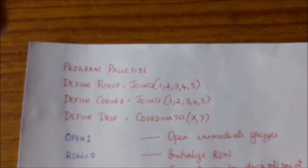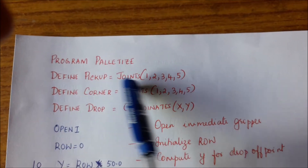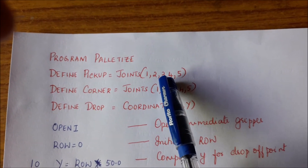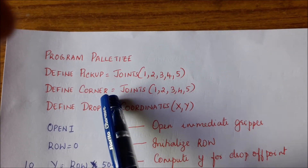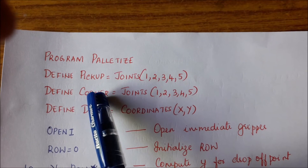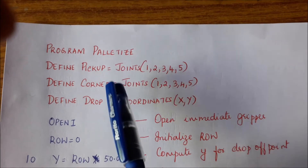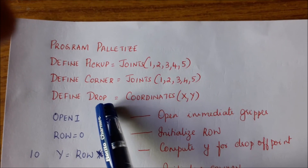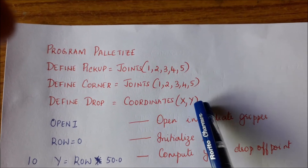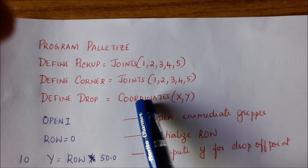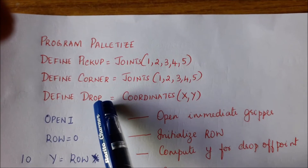The first part of the program is to teach the robot where the pickup point is, so the robot learns the coordinates of the pickup point. Similarly, we teach the robot the coordinates of the corner point. These are our location constants: pickup and corner. The location variable 'drop' holds the x and y coordinates corresponding to each placement point — the intersection of a row and column. As x and y change, the drop coordinates also keep changing.